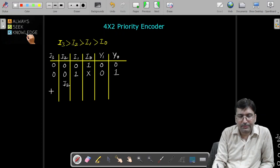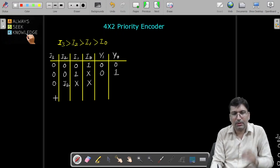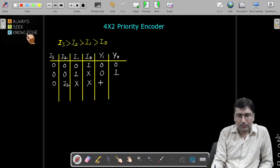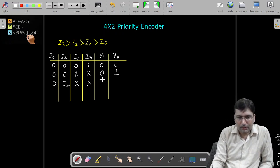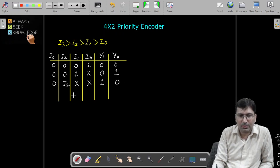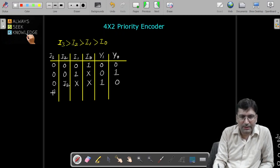Now in case let's say i2 is high. If i2 is high, these places will become don't care, i1 and i0, because i2 is having higher priority than these and i3 I am assuming as zero. So we need to represent two, we will get one zero here. y1 will be one and y0 will be zero. Finally, let's say in last row if we are getting i3 as high, these remaining places will become don't care.